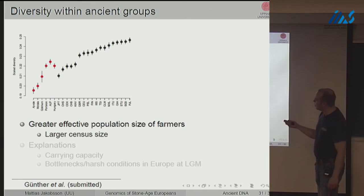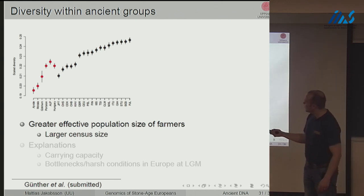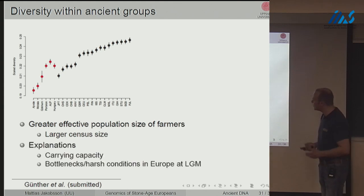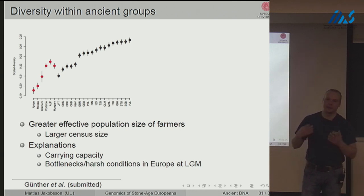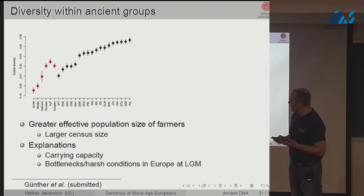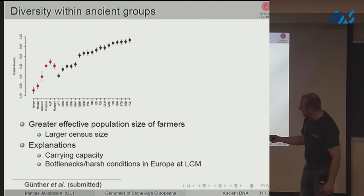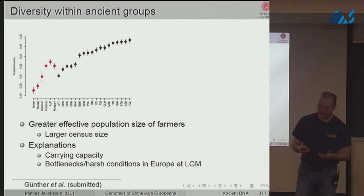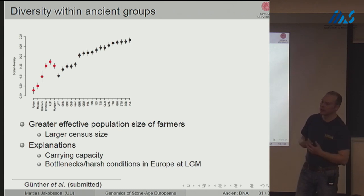Looking at genetic diversity: the farmer groups show more genetic diversity than the hunter-gatherers, consistently across Europe. The effective population size of farmers appears greater, and probably their census size was also greater — the farmers had a greater carrying capacity and could support larger numbers of individuals. The hunter-gatherers are also descendants of people who lived in Europe under harsh ice-age conditions, forced through population bottlenecks, further reducing their diversity. Both factors explain the diversity difference.